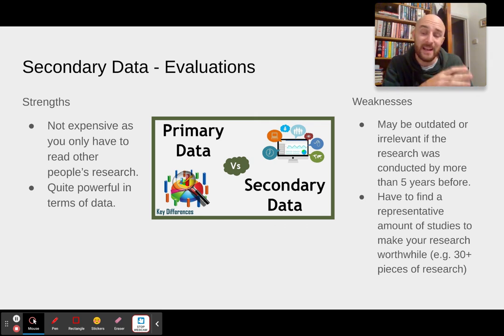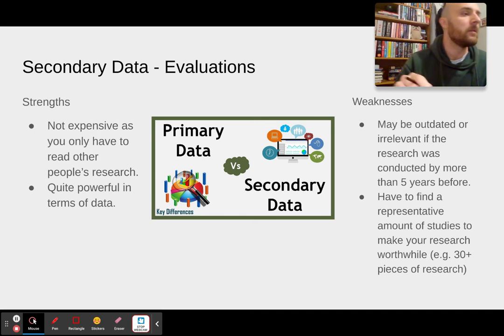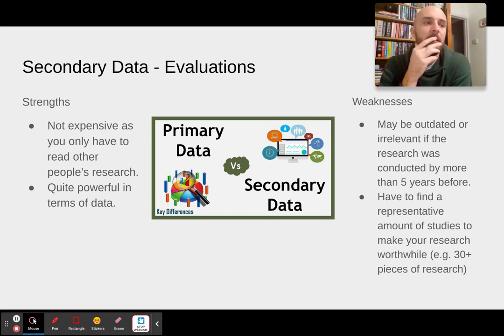So for example, Van Ijzendoorn's research, his meta-analyses into how different countries reared their children was quite powerful. If I did one piece of research in China about and using the strange situation, that's not really that powerful to be honest. So you would argue you could find freak findings. But I'm going to add another strength here of secondary data. Secondary data, when collected in its droves, actually reduces the chances of freak findings, because if you're collecting them from 30 pieces of research, they're not freak findings.